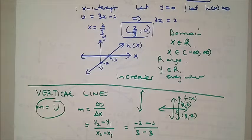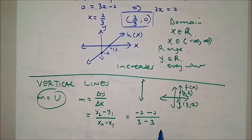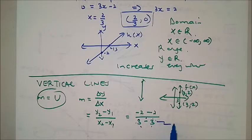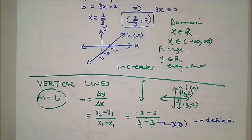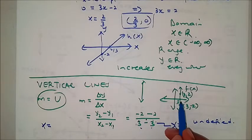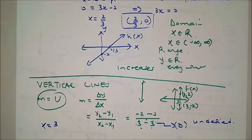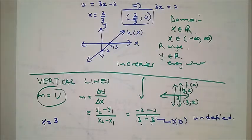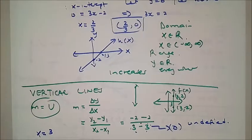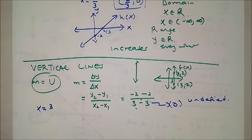At the denominator we get zero, so this gradient is undefined. Hence, the equation of vertical lines is simply x equals something — for example, the equation of this line is x = 3. The value of x stays constant for a vertical line.